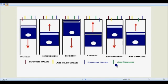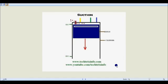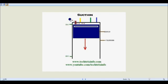Let's see how it actually works. In the first stroke — the suction stroke — the piston is at the top dead center and moves towards the bottom dead center as shown by the arrow. At this point, the red suction valve opens and the air-fuel mixture is sucked inside due to the negative pressure created as the piston moves down.